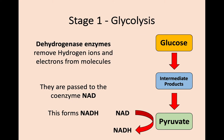Finally, for glycolysis, a type of enzyme called dehydrogenase is used to remove hydrogen ions and electrons. These are passed on to a coenzyme called NAD, which then forms NADH — the H coming from the hydrogen. These hydrogen ions and electrons are going to be really important in the production of more molecules of ATP at a later stage in cellular respiration. So we leave glycolysis with a molecule of pyruvate, two molecules of ATP, and NADH.